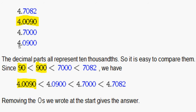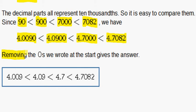We use our 900 and take our 4.0900, write it second. We take our 7,000 and write 4.7000 third, and our largest number is 4.7082 and we write that out last because it's the greatest. Now removing the zeros we wrote at the start gives the answer.